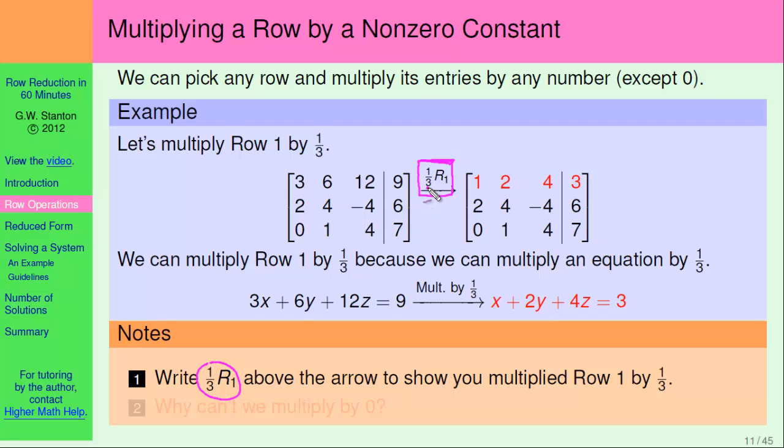So here the one-third says I'm going to multiply by one-third, and the R1 says I'm going to multiply by row one. If you want, you can write out row one, but R1 is just less writing, so it saves a little time.